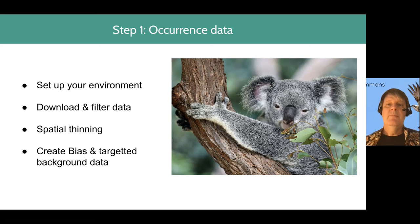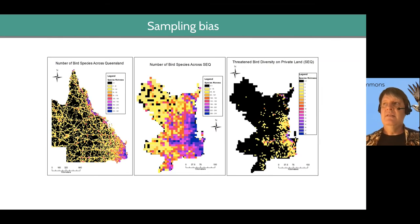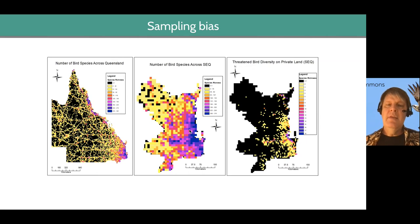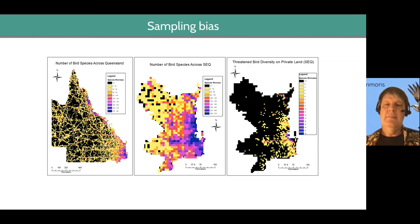Now, we show you how to do some spatial thinning. If we go back to those biased records near the city, one thing we can do is if we thin out the records so there aren't as many of them, then the records out in less-sampled areas will have more weight. Spatial thinning is a useful step — sometimes a first step — in reducing the amount of bias in your results, so all your presence records aren't concentrated near the city.